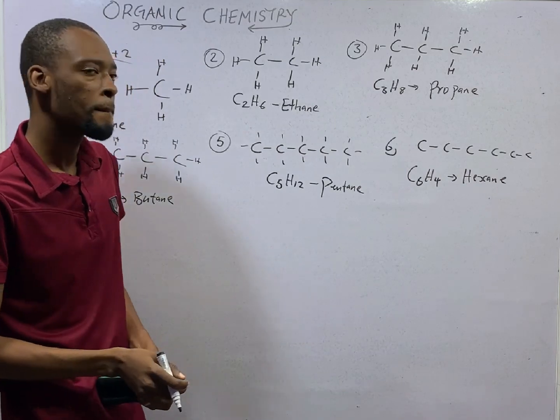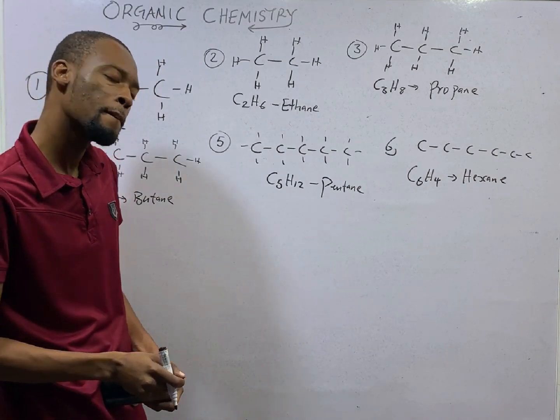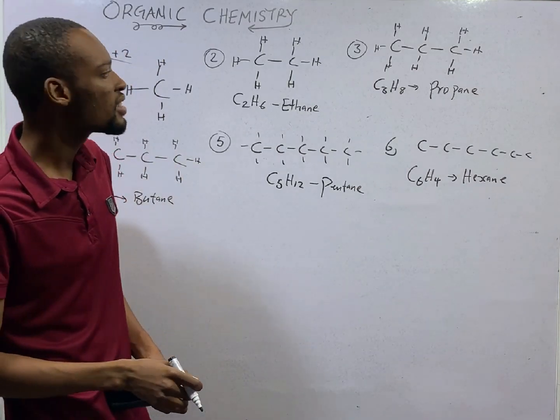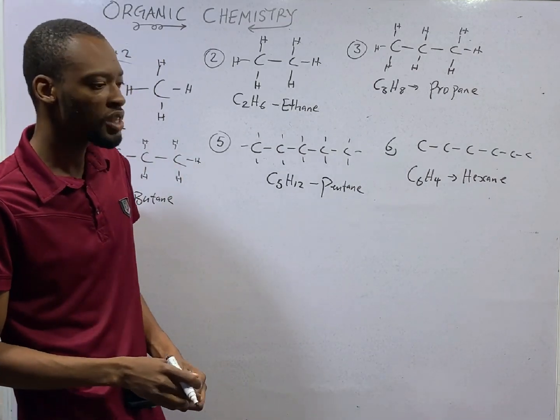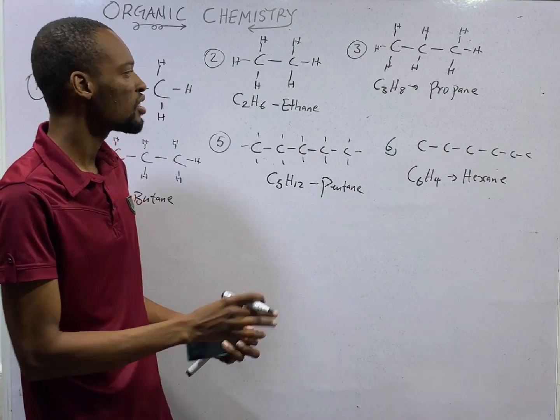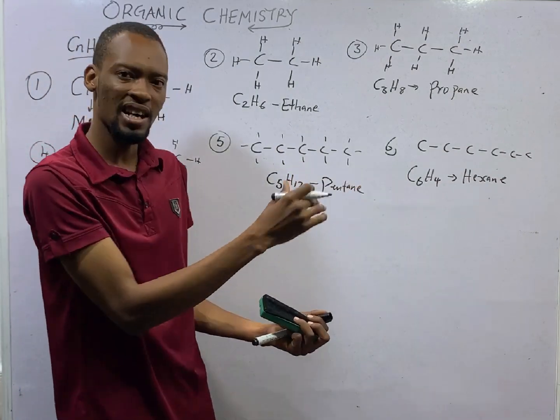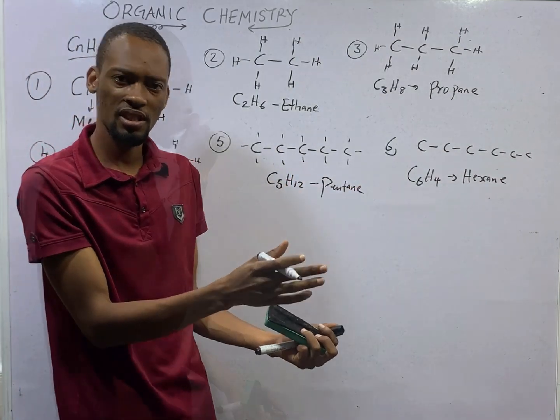Now for alkenes with a double bond, the ending will simply be 'ene'.